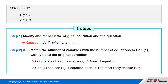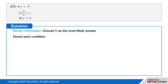Following steps 2 and 3: from the original condition, we have one variable, x. To match the number of variables with the number of equations, we need one equation. Since conditions 1 and 2 will each provide one equation, D would most likely be the answer. Recall the three principles and choose D as the most likely answer.